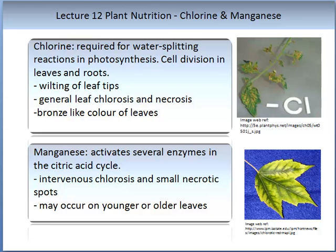Manganese activates several enzymes in the citric acid cycle. You can see interveinal necrosis and small necrotic spots. It may occur in the younger or the older leaves, as manganese is mobile. This is an image of manganese deficiency in a maple leaf.